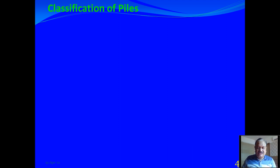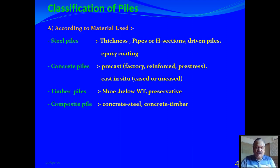Piles are classified according to five criteria. The first is according to the material used. When steel is used, it is called a steel pile. The thickness is designed considering the corrosion effect. Steel piles are usually in the form of pipes, either solid or hollow, or sometimes H-sections. Steel piles are driven piles, driven with the help of a hammer.